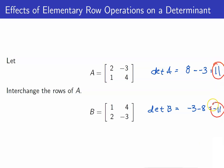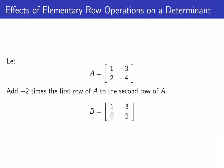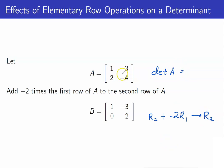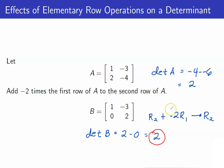So what happened with the determinants? When we interchange the rows of A, the determinant simply got multiplied by negative 1. Next, what if we perform a replacement row operation? In this case, B was obtained by adding row 2 to negative 2 times row 1 of A as the new R2. The determinant of A is equal to negative 4 minus negative 6, which is 2, whereas the determinant of B is equal to 2 minus 0, which is also equal to 2. So when we perform a replacement row operation, the determinant does not change.